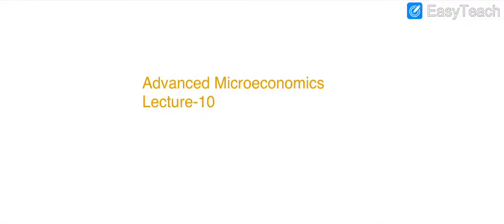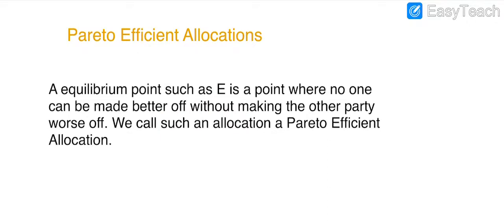Advanced microeconomics, lecture 10. In the last lecture we were discussing trade and the Edgeworth box. Today we are going to discuss Pareto efficient allocations. In the Edgeworth box we discussed the equilibrium point, where no one can be made better off without making someone else worse off.